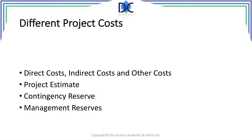Let's have a look at the different costs that we can identify on our project. We look at direct costs, indirect costs, and other costs that we may incur. We also look at the project estimate, contingency reserve, and management reserves.